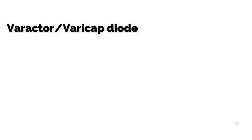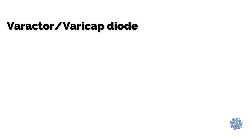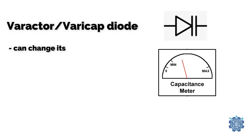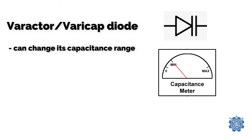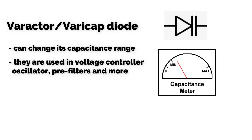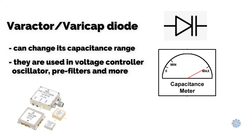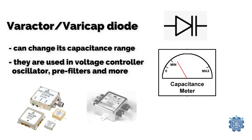Varactor diode, or varicap diode, is a type of diode that can change its capacitance range when a constant voltage is applied to it. They are used in voltage controlled oscillators, pre-filters and so on.